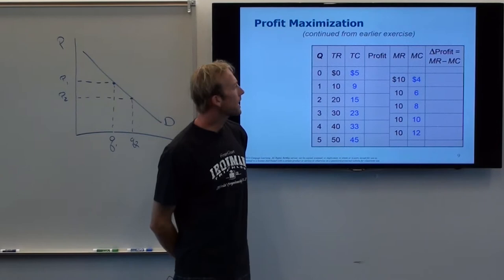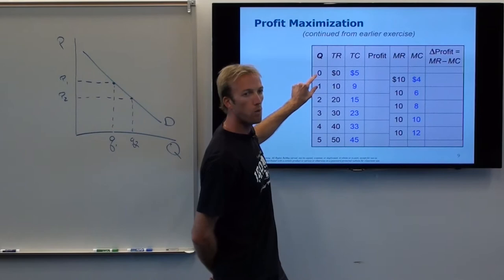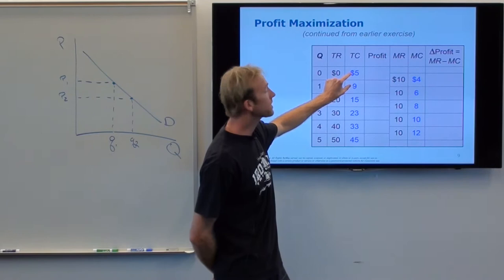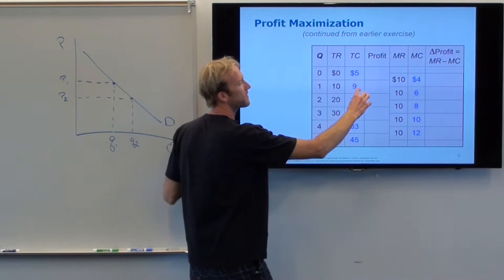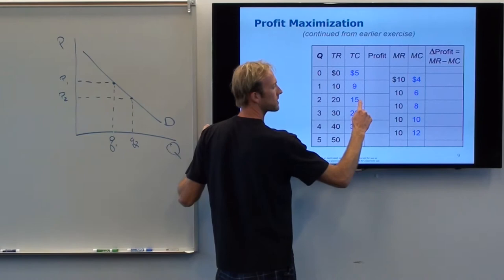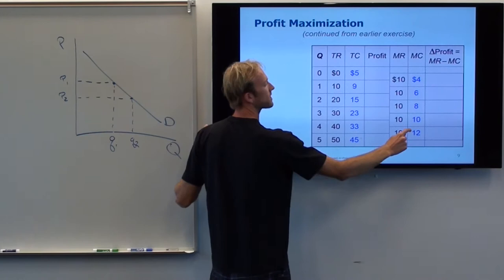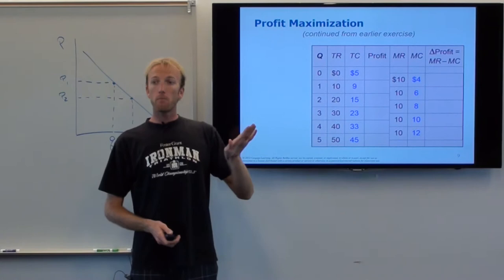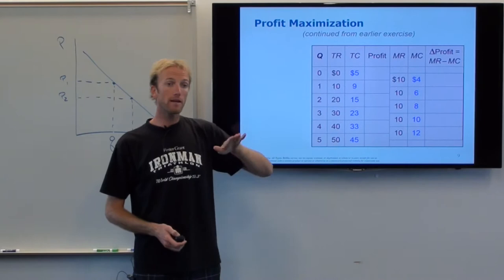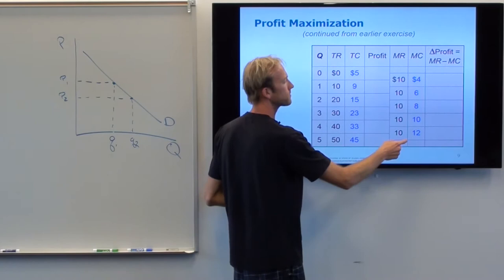Let's look at the marginal costs. Going from 0 to 1, it costs $4 extra. From 1 to 2, from $9 to $15, that's $6 extra. Going to 3 costs $8 extra, going to 4 costs $10 extra, and going to 5 costs $12 extra. Do you see how the marginal cost is increasing? Last chapter we learned that as you increase quantity, the marginal cost starts taking off.